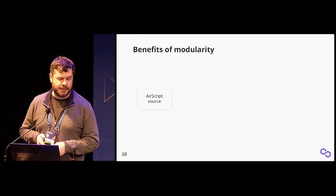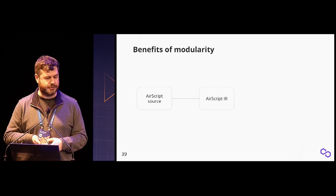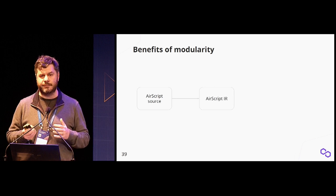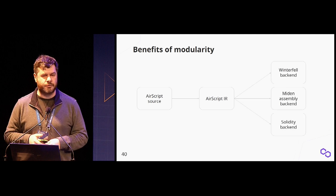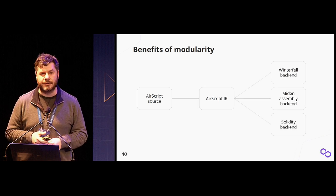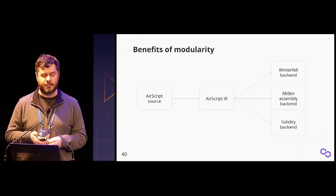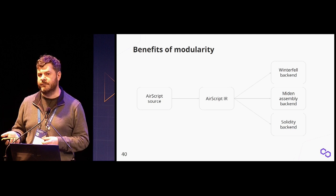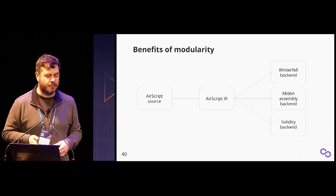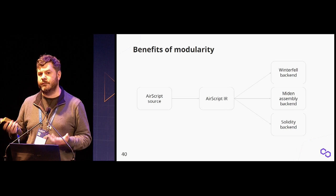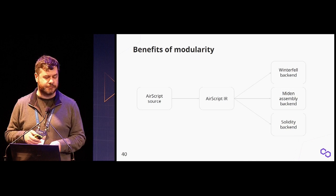To touch on modularity: you start with the AirScript source, produce an intermediate representation, and then go to different backends from that IR. In our case, we use Winterfell as a STARK prover, but we also want recursive proofs—so we want to generate constraint evaluation logic in Miden Assembly. We also want an on-chain verifier, so we need something that easily translates constraints into Solidity.